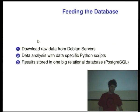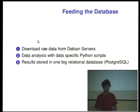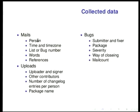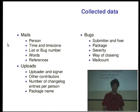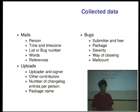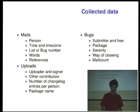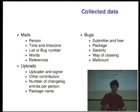I downloaded the raw data, then wrote specific Python scripts which extracted the things I was interested in into a big relational database. From mails, I collected the person who wrote it, the time, the time zone if available in the mail headers, which list or bug the mail was sent to, how many words are in there, and references to other mails. Additionally, for uploads and bugs, more data was collected.